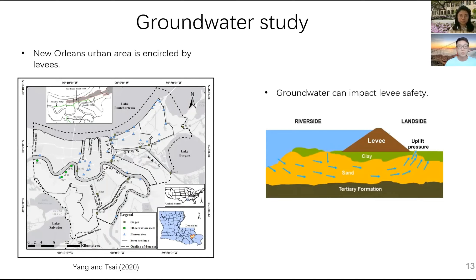Here I want to talk about my previous project for groundwater study which focuses on the New Orleans area. As we can see in the left map, this is the map for New Orleans city. New Orleans is a coastal city which is adjacent to coastal lakes and oceans, and we can also see there are many navigational canals, waterways, and the Mississippi River in the urban area of the city.